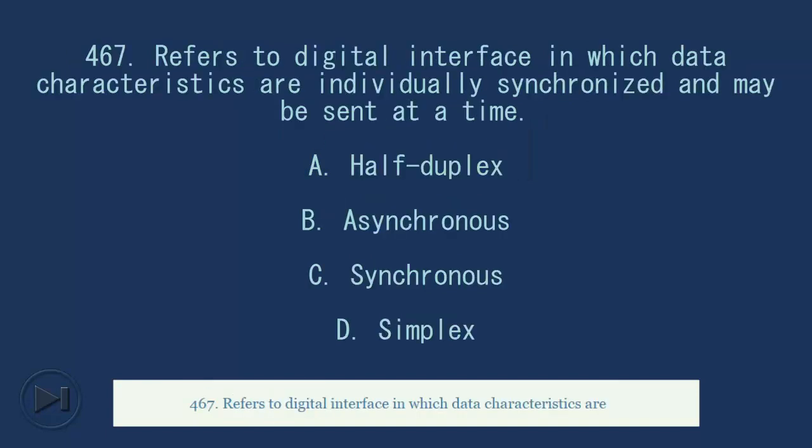467. Refers to digital interface in which data characteristics are individually synchronized and may be sent at a time. A. Half duplex. B. Asynchronous. C. Synchronous. D. Simplex. Answer, B. Asynchronous.